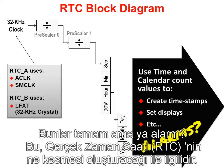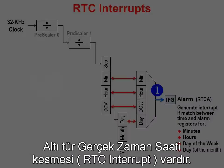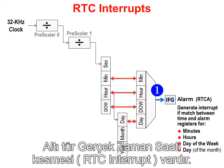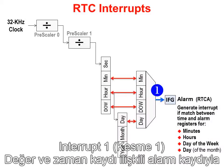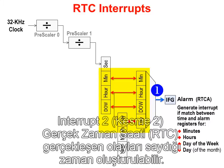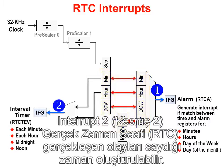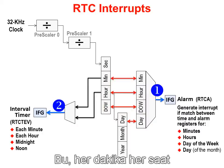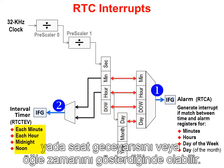What interrupts can the RTC generate? There are six types of RTC interrupts. First, you can generate an interrupt whenever the value in the time register matches its associated alarm register. Second, an interrupt can be generated when RTC count events occur. This can happen at each minute, at each hour, or whenever the time reaches midnight or noon.